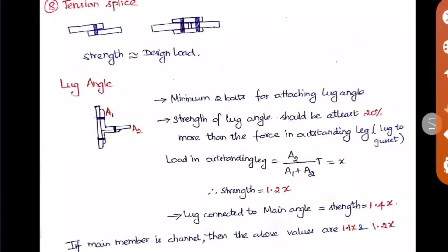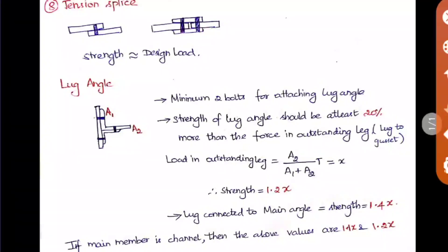The smaller angle drawn on the other side is called the lug angle. We provide this because normally when giving a connection to an angle or plate, the outstanding leg is somewhat weaker. To enhance the efficiency of that outstanding leg, we provide another angle of very short length — that is the lug angle. There is a saving of gusset plate with this provision, but the disadvantage is it increases the number of bolts, which may reduce efficiency. Nowadays lug angles are not used in practice, but we need to study them theoretically.